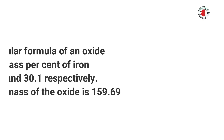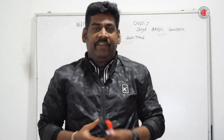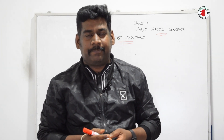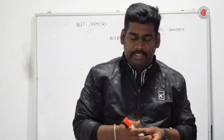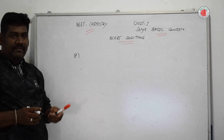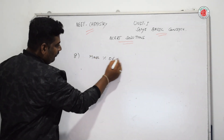The next question: determine the molecular formula of an oxide of iron in which the mass percent of iron and oxygen are 69.9% and 30.1% respectively, given that the molar mass of the oxide is 159.69 grams per mole. This question is similar to the earlier problem. Mass percent of iron = 69.9%.